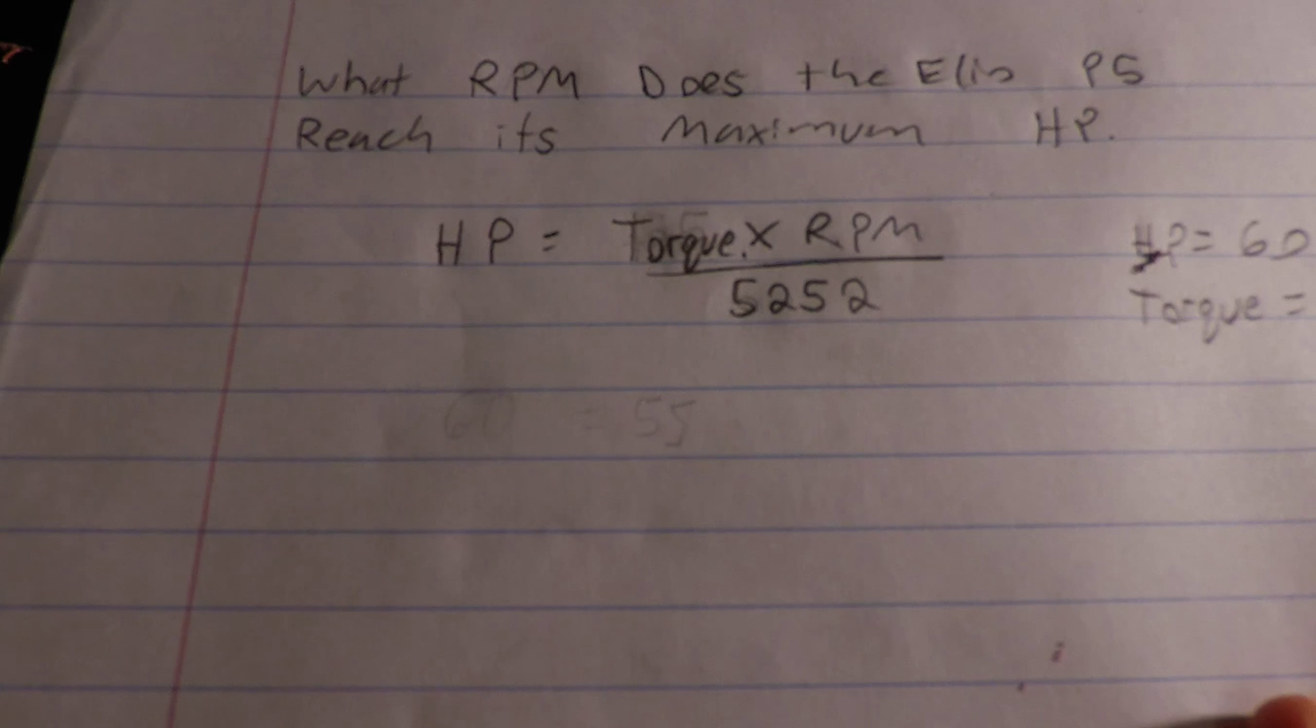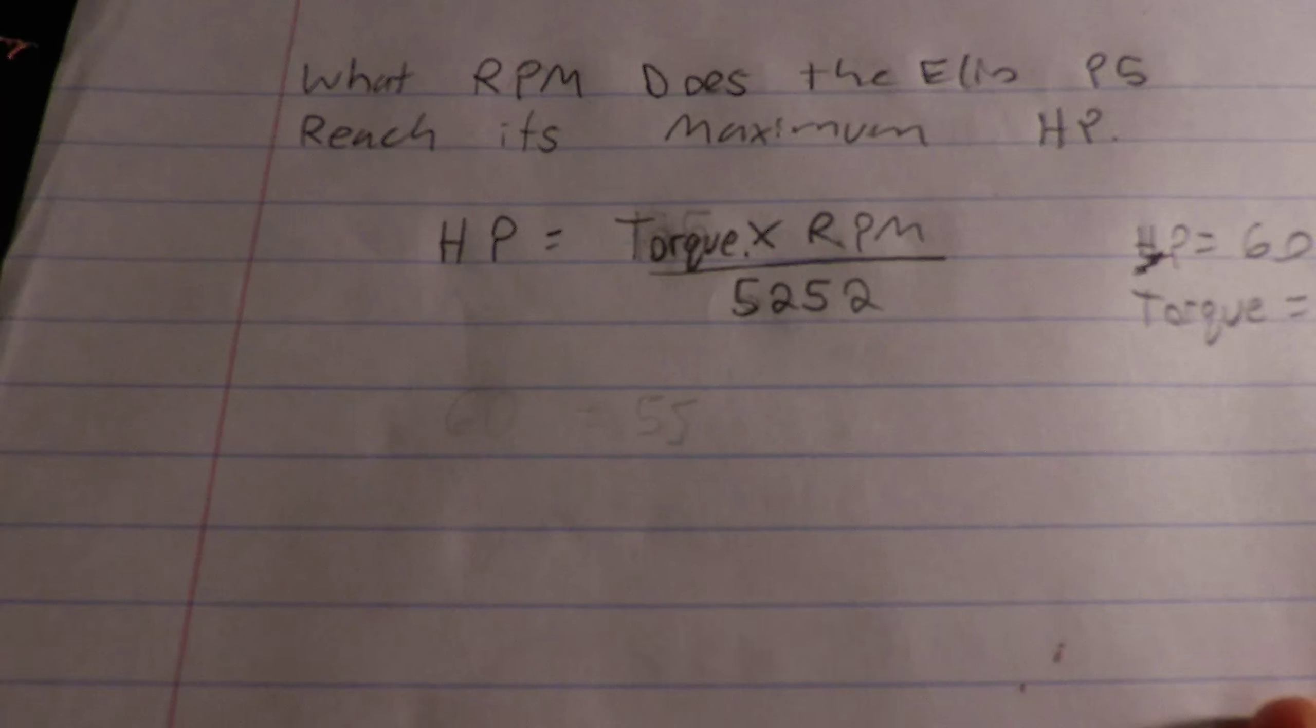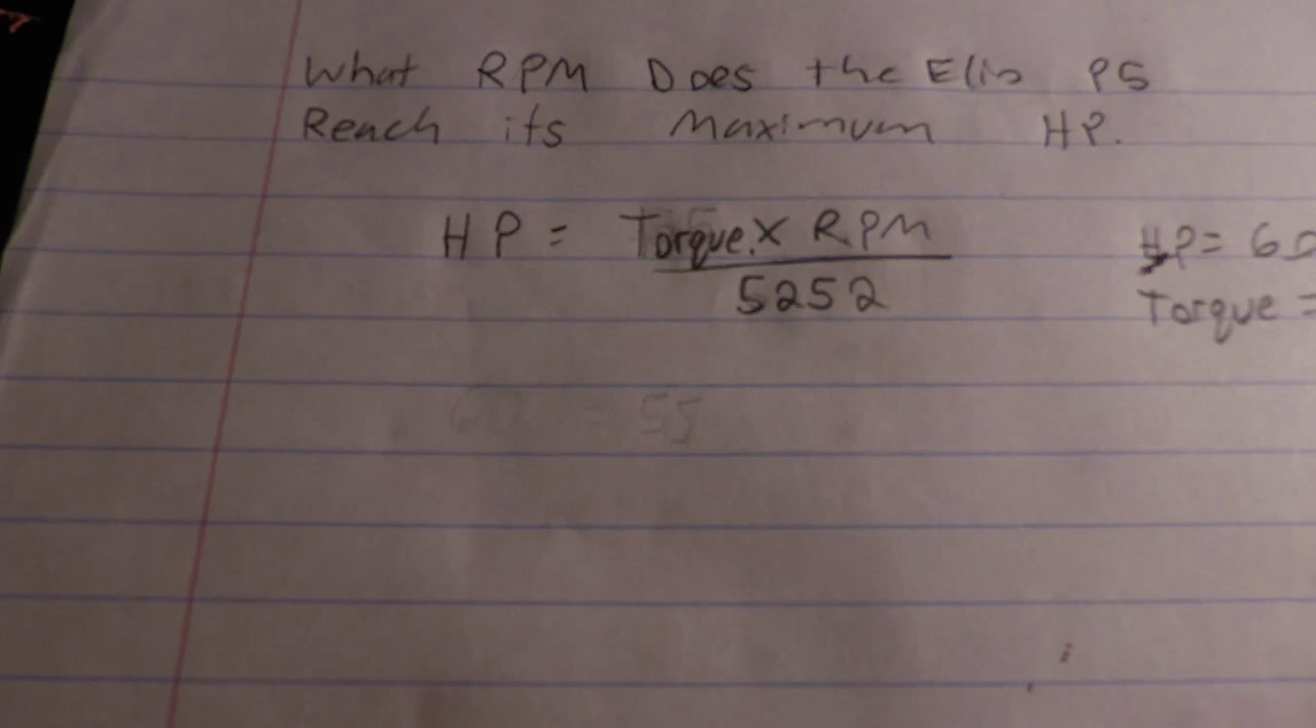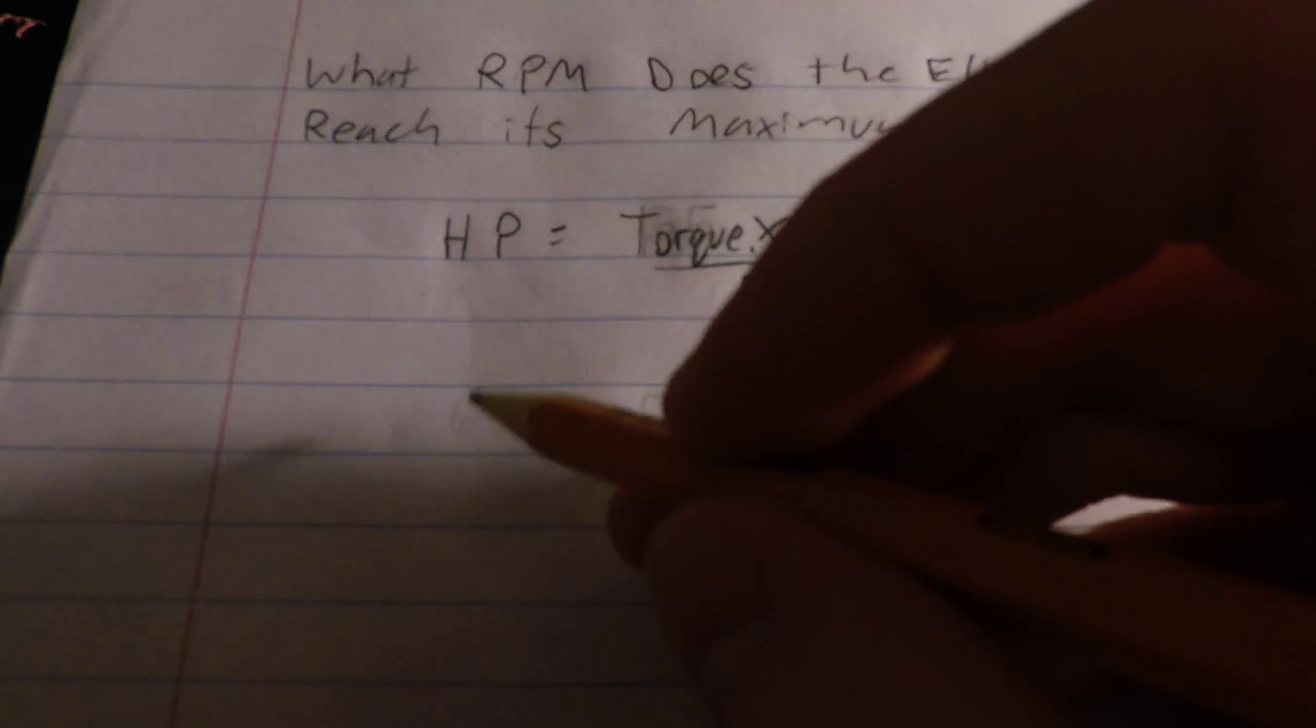Given the fact that we know the horsepower figure of the Elio engine is 60 and the torque figure is 55 foot-pounds, we can solve this equation.